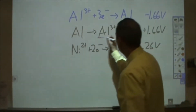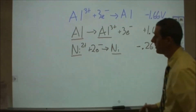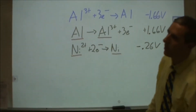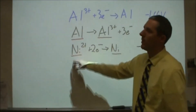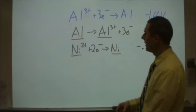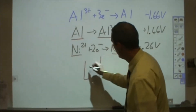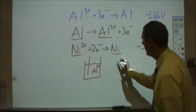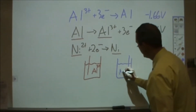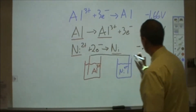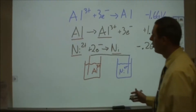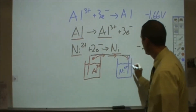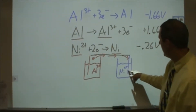You need to understand the difference between aluminum metal and aluminum ions. Aluminum metal has 13 electrons; the aluminum ion (Al³⁺) has 10. Similarly, nickel metal has 28 electrons while Ni²⁺ has 26. We construct the battery with an aluminum electrode in an aluminum ion solution on one side, and a nickel metal strip in a nickel ion solution on the other. We connect the two with a wire, and electrons flow from the aluminum side toward the nickel side, where the nickel ions are converted to nickel metal.